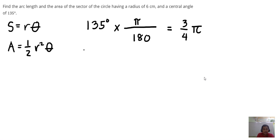So to solve for the arc length, S is equal to r, which is given to be 6 cm, and then theta is 3 over 4 pi.